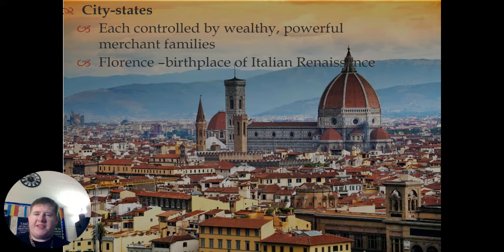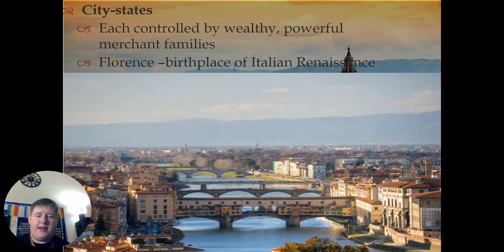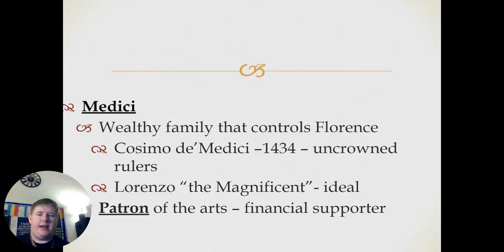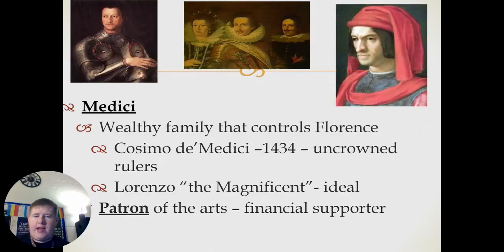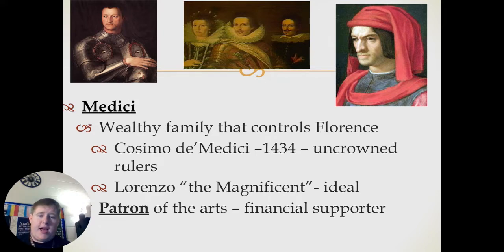We also have to talk about city-states, each of them being controlled by wealthy and powerful merchant families, with the city of Florence being the birthplace of the Italian Renaissance. Here's an image of it today. We have to talk about the Medici family — a very wealthy family that controlled the city of Florence, with Cosimo de' Medici in 1434. They were uncrowned rulers. Also Lorenzo the Magnificent, who represented the ideal ruler. They were major patrons of the arts, or financial supporters.